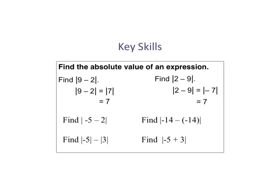Let's jump into some practice. We have the absolute value of 9 minus 2. First, do what's inside the grouping symbol: 9 minus 2 is 7, and the absolute value of 7 is 7. The second one is the absolute value of 2 minus 9. Inside the bars, 2 minus 9 is negative 7, and the absolute value of negative 7 is positive 7.